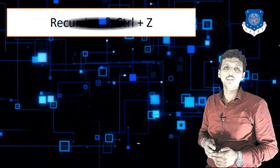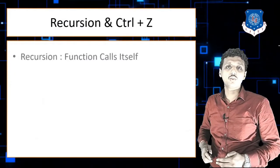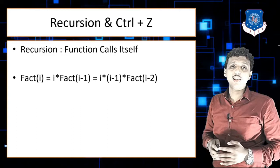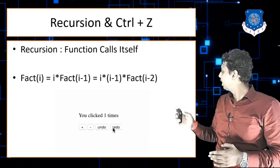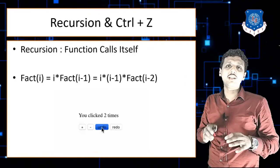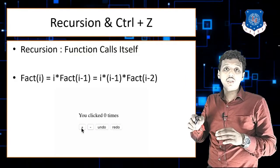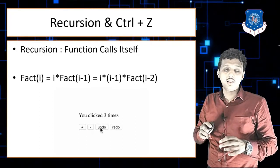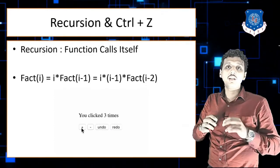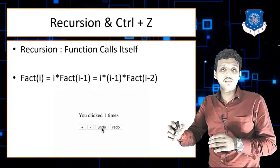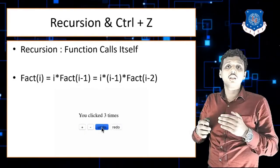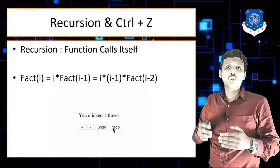Recursion means a function calling itself — the factorial example is very common for it, and stack is used there. The next is undo/redo using Control Z. If I write 'data structure' and press Control Z, it is gone. If I write 'computer science' and press Control Z again, computer science is gone. Control Z is used to undo your work, and stack is used for that.